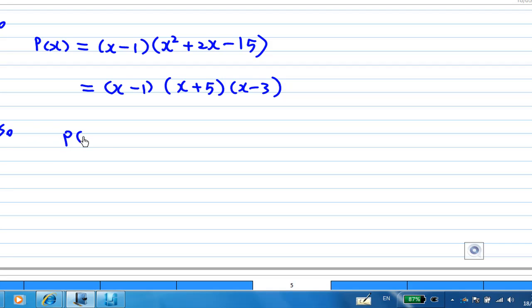Therefore p(x) equals (x minus 1)(x plus 5)(x minus 3). Therefore p(x) equals 0 when x equals 1, x equals minus 5, x equals 3.